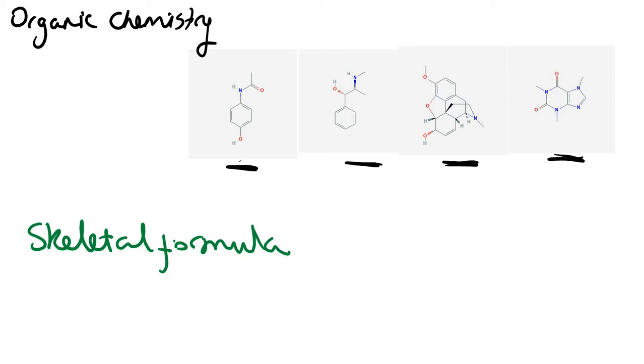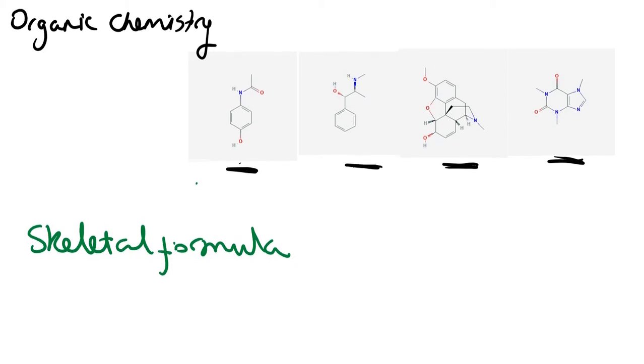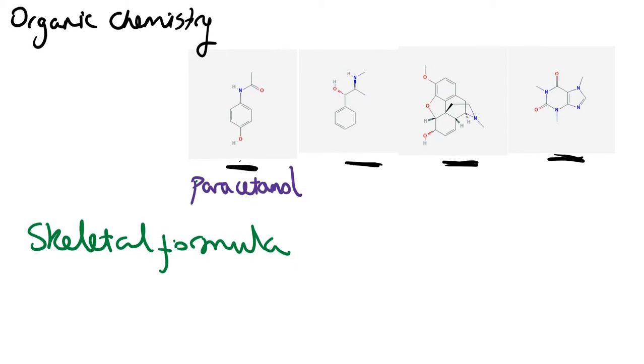So you'd be familiar with some of the names of these compounds. If I told you this one is just paracetamol, we're familiar with paracetamol. It helps us to relieve pain. The next one there is Sudafed. We take Sudafed when we've got a cold. The next one, a little bit more complicated looking, that's actually codeine. And the last one that we have there is caffeine.